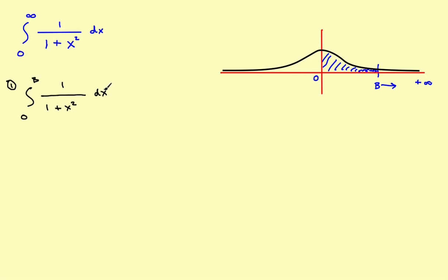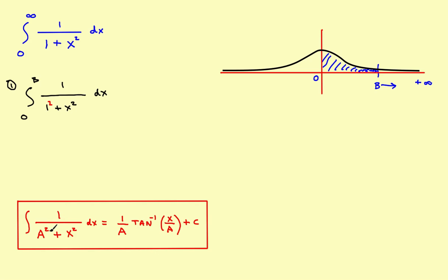A lot of these improper integral problems, the big trick is: can you find the correct rule to apply when doing the integral? The trick here is to recognize that this is actually in the form of one of the inverse trig functions. Rather than thinking of it as one, think of it as one squared — so you've got one over one squared plus x squared. If you look in your trig rules under the inverse trig, you'll find a rule that says: the integral of one over a squared plus x squared equals one over a times the inverse tangent of x over a, plus c.